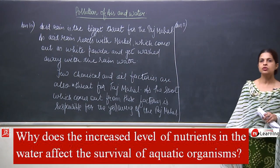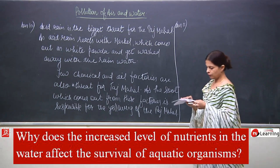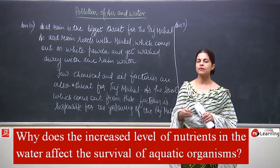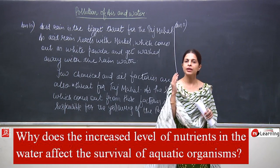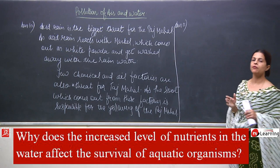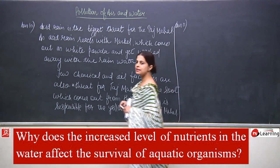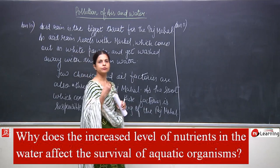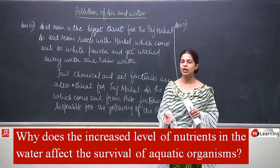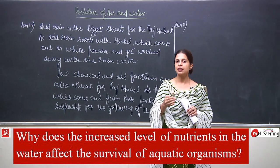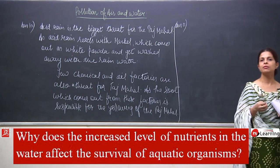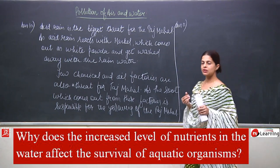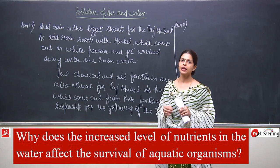This is known as eutrophication. The oxygen consumed by decomposers is so much that aquatic animals do not get proper oxygen and their lives come in danger — many aquatic animals actually die. This is how it affects aquatic organisms.